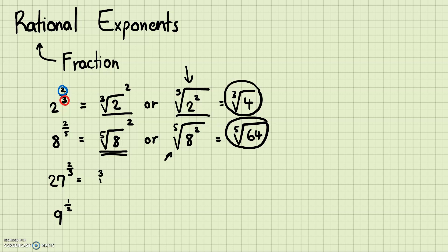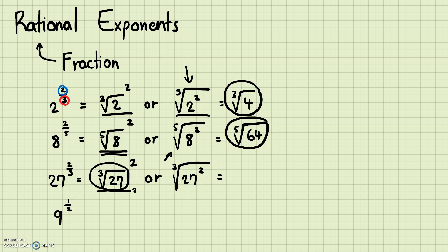Next, 27 to the 2/3 power. You can do the cube root of 27 and then square that, or do 27 squared and then the cube root. The first way is easier here: the cube root of 27 is 3, and 3 squared is 9. If you did it the other way, 27 squared is 729, and finding the cube root of 729 is much harder. So the answer is 9.